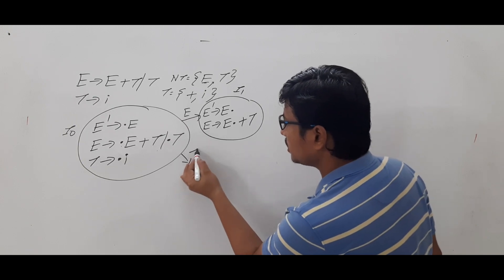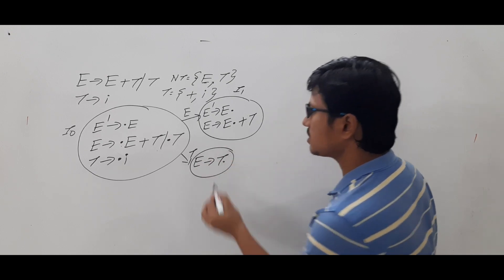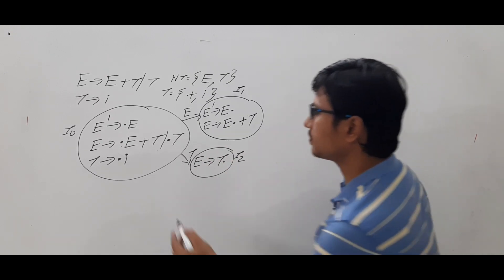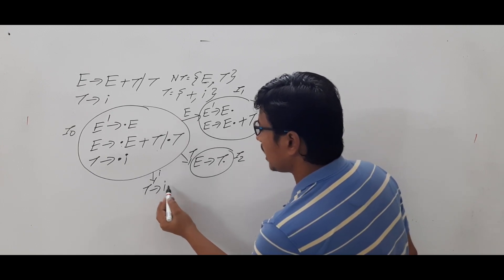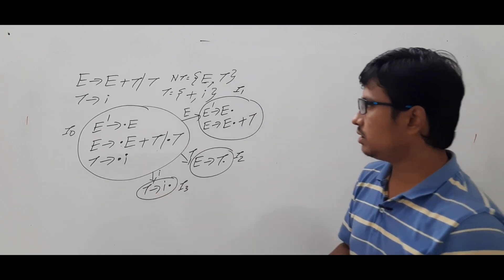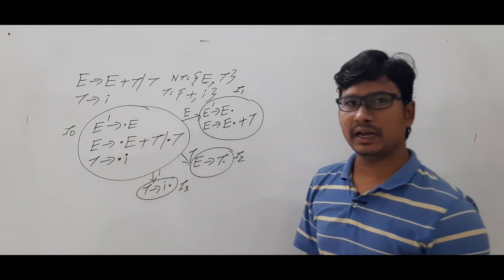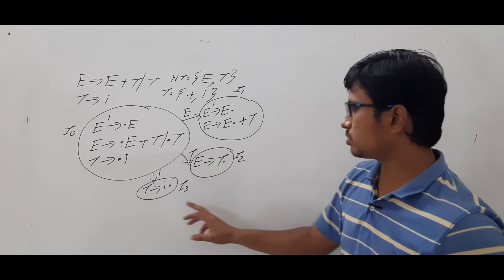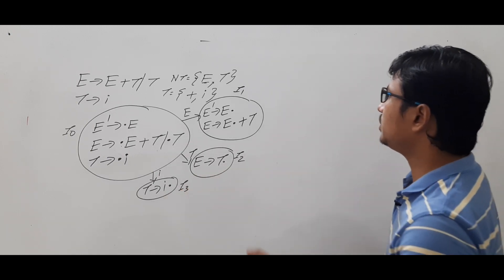GOTO on T gives E → T•, which is item I₂. Similarly, GOTO on i gives T → i•, which is item I₃. So we have computed the GOTO on E, T, and i. E → T• is a reduce move and T → i• is also a reduce move, so I₂ and I₃ are finished.